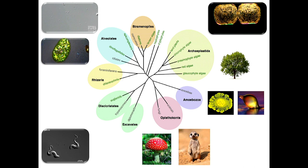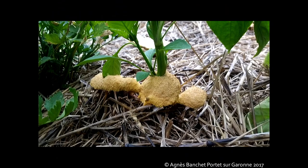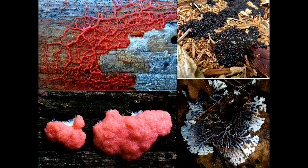Slime molds belong to a kingdom called Amoebozoa. I think the most famous species in Amoebozoa is Amoeba proteus. Usually when you see slime mold in the field, they sit on trees like that, in forests. They can also sit in your garden. There are more than 1,000 species of slime molds and they can have all kinds of colors and shapes.